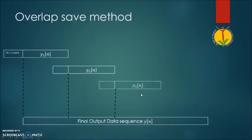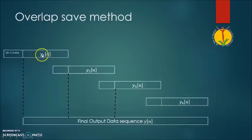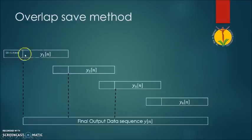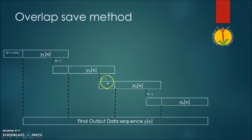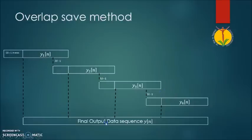In the next step, from the circularly convolved output blocks, the first M-1 samples of each block we have to discard. So we discard M-1 samples from y1. Similarly, from y2 we discard M-1 previous samples, and likewise we discard M-1 samples from y3 and y4 as well. Whatever remaining samples are there, we add them together to get the final output data sequence.